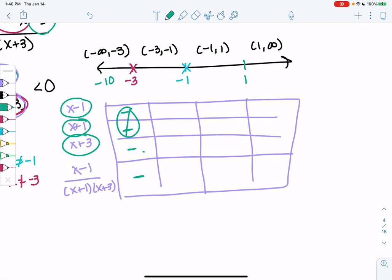Negative 3 to negative 1, I'll pick negative 2. So negative 2 minus 1 is negative. Negative 2 plus 1 is negative, because 2 is bigger than 1, so it'll stay negative. And then negative 2 plus 3 will become positive. So negatives cancel out, and this interval is positive.